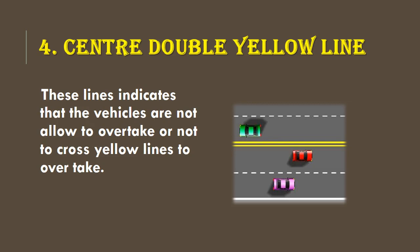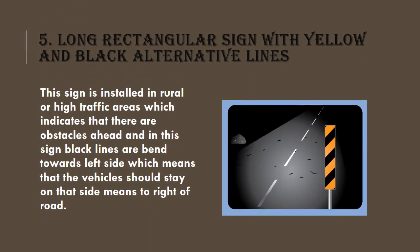Fifth is the long rectangular sign. This means that you are in rural areas where there is a lot of traffic. In the village, you can see these signs. That means that in the traffic there are more obstacles and many people. We have to run slowly. You can see there is a black line band, so this means that we have to stay on that side of the road — we can't run from the other side.